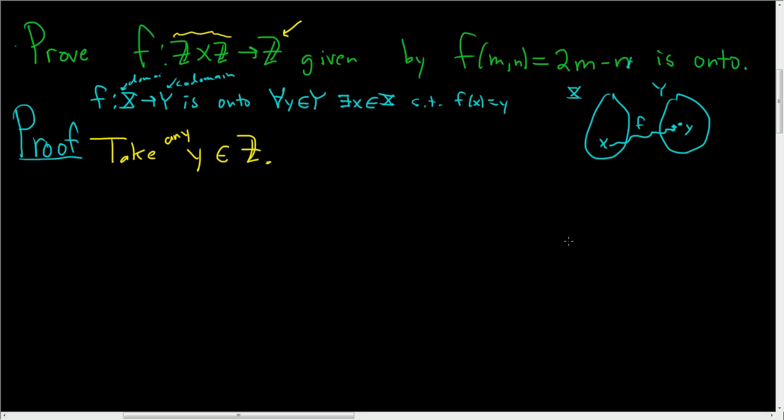If we go to the side, we can work it out carefully. Let's see, we want a pair MN that's going to take us to y. What is f of MN? It's 2M minus N, and that has to take us to y. We want to get y.